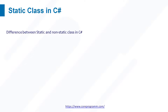For the difference between the static and non-static class: generally the static class is the same as a non-static class, but the only difference is that a static class cannot be instantiated. If we apply the static modifier to a class, then we should not use the new keyword to create a variable of the class type. Another difference is that the static class will contain only static members, but the non-static class can contain both static and non-static members.